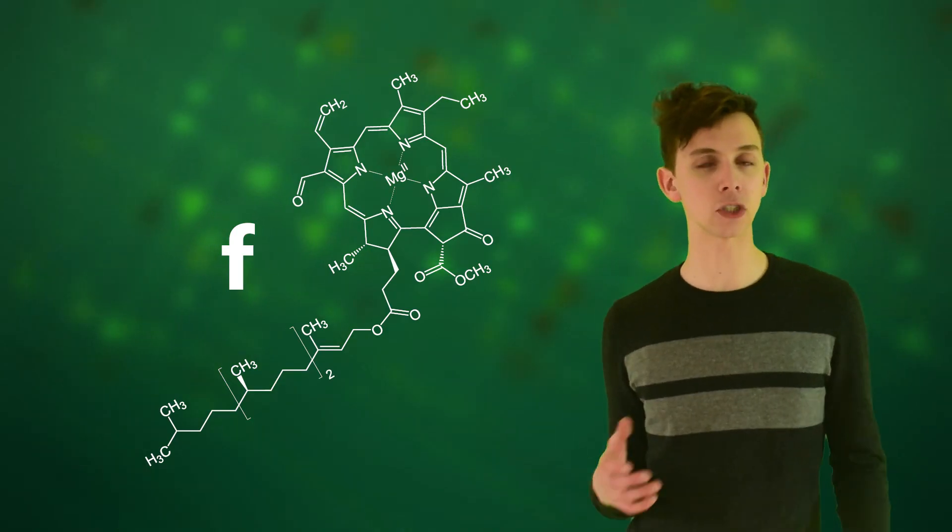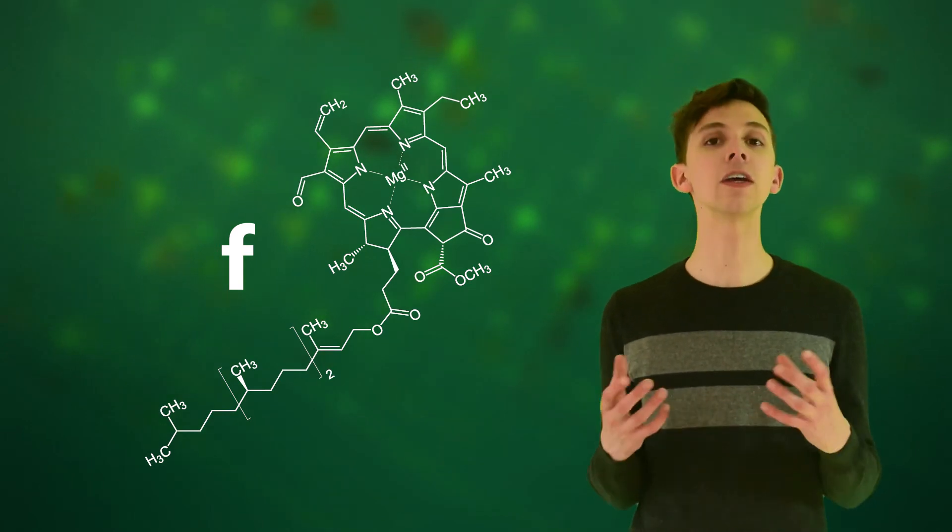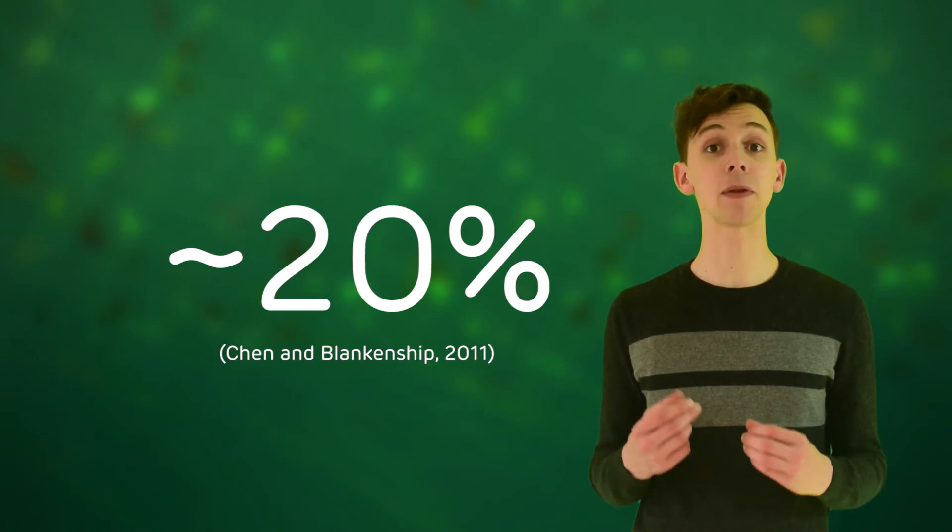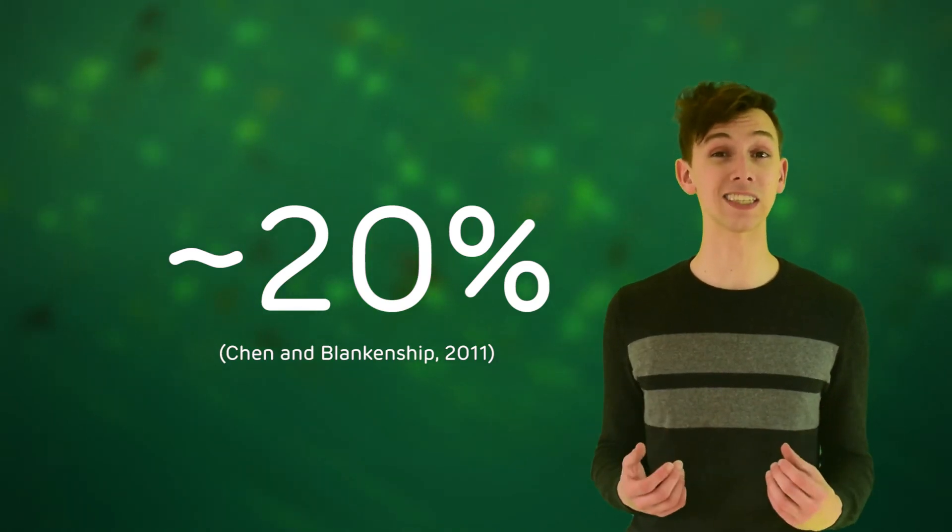If we could engineer plants to utilize chlorophyll F, we could increase the amount of light available to plants by nearly 20% and allow plants to grow in conditions that are currently considered light deficient.